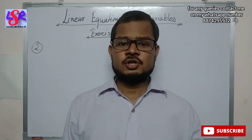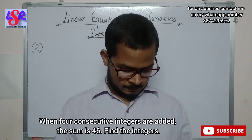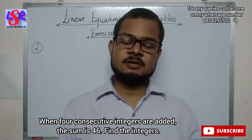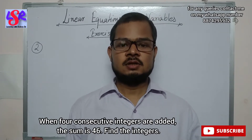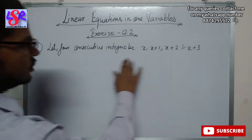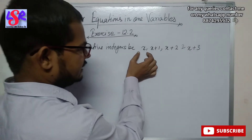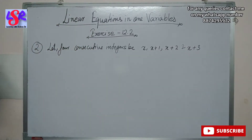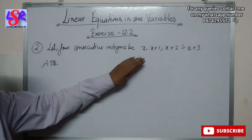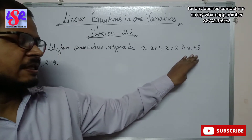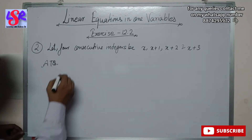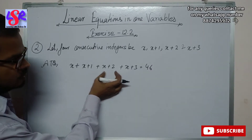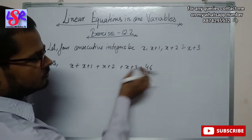Now let's move to question number 2. Here, when 4 consecutive integers are added the sum is 46. Find the numbers. Now let the 4 consecutive integers be x, x plus 1, x plus 2, and x plus 3. According to the question the sum of all 4 integers is 46, so x plus x plus 1 plus x plus 2 plus x plus 3 equals to 46.